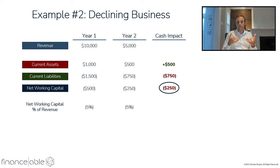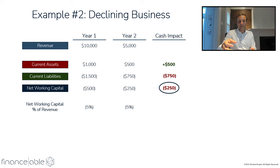The punchline here is that when you have a declining business with negative working capital, the business actually requires cash on the way down. You get hit with a decline in the business as well as cash investment needs as the business declines, because those liabilities are coming due — again, assuming everything is proportional to revenue on the way down.